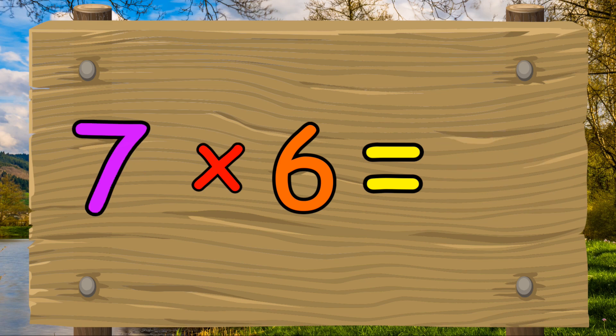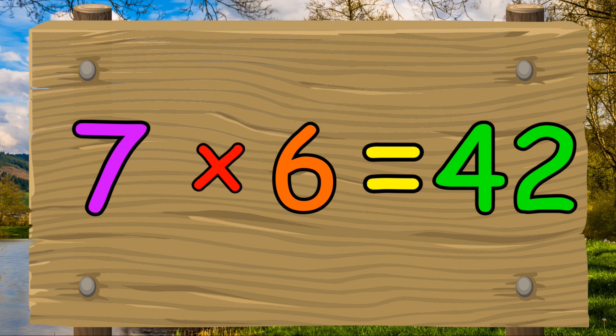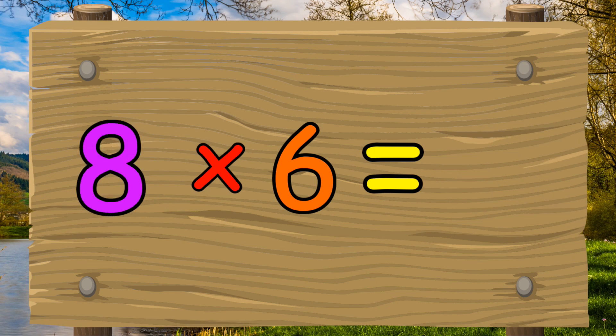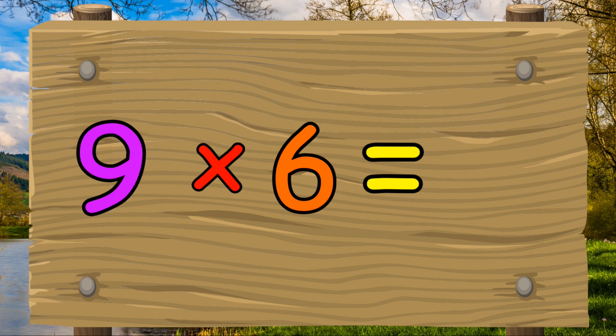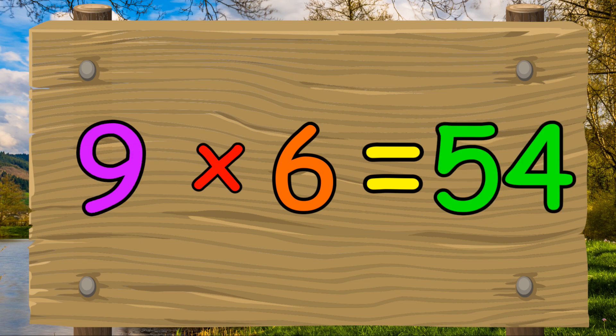Seven times six equals forty-two. Eight times six equals forty-eight. Nine times six equals fifty-four.